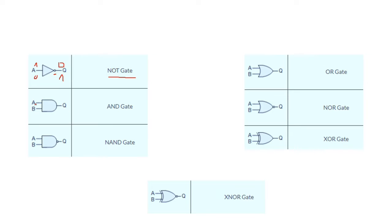Here we have the AND gate. As you see, we have A and B — two inputs — for the AND gate, and we have an output. Here we have the NAND gate. The NAND gate has two inputs and an output with a small circle.